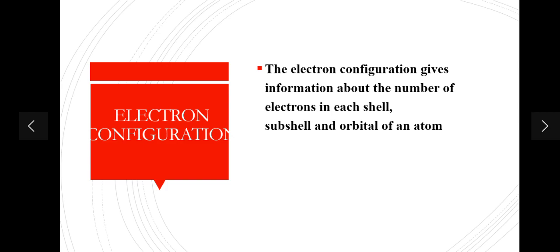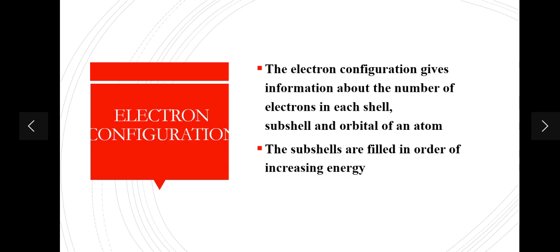What do we mean by electronic configuration? This electronic configuration gives us information about the number of electrons in each shell, subshell, and orbital of an atom. If you're not aware of the terms shell, subshell, and orbital, make sure you check out our previous videos. Now let's further discover how these electrons are arranged in their shells, subshells, and orbitals.